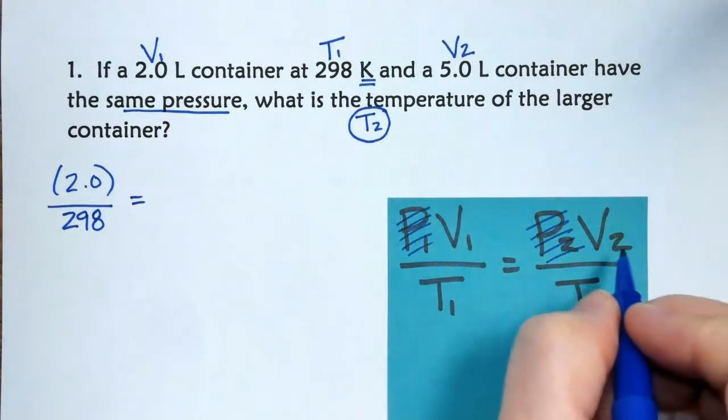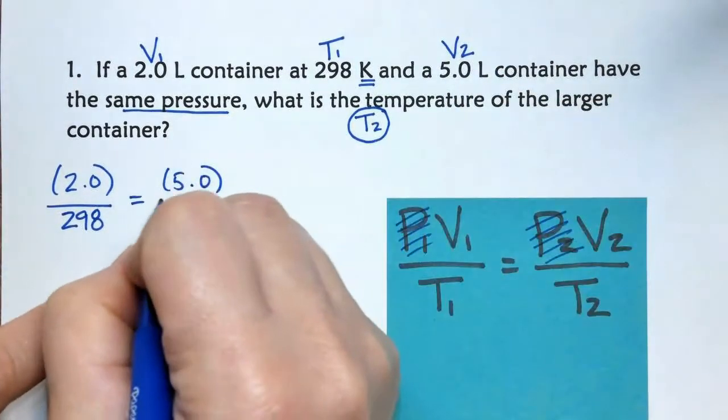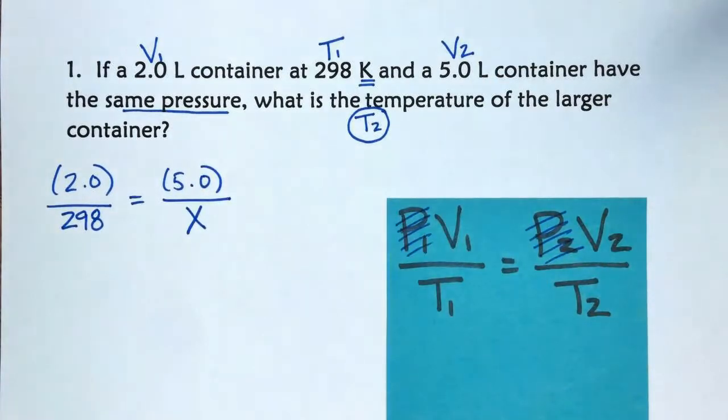So V1 is 2.0 divided by T1 must be in Kelvin, it is already in Kelvin, so we can put T1 here at the bottom, and that's going to be equal to V2, which is 5.0 liters, divided by T2 is what I want to solve for, so I'm going to put an X right there.